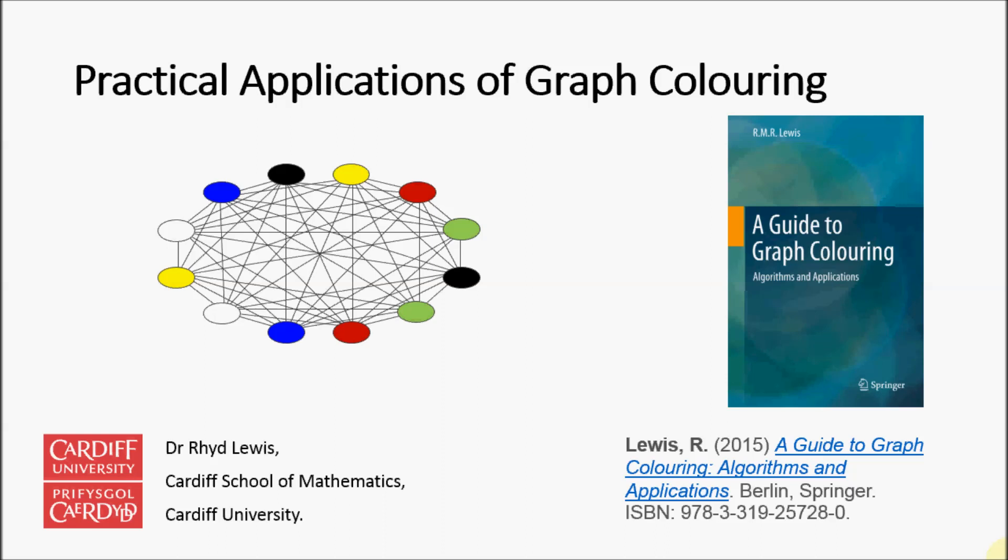In this video, we give five examples of how graph coloring can be used to solve real-world problems. Further information on these and other examples can be found in this book, A Guide to Graph Coloring Algorithms and Applications.